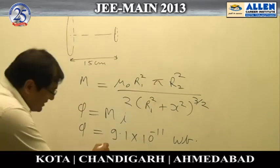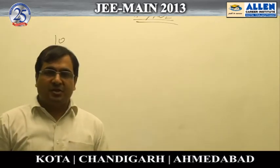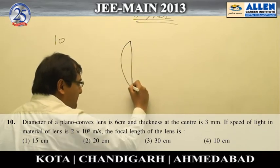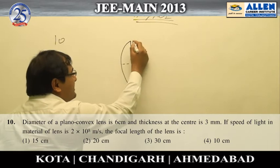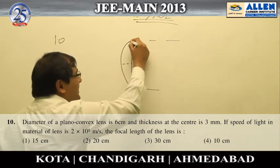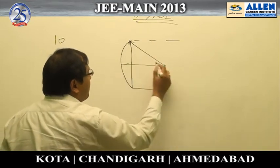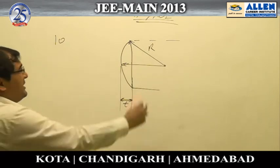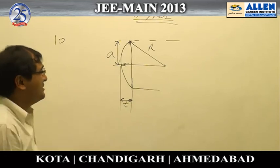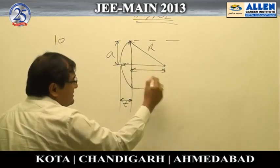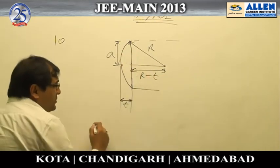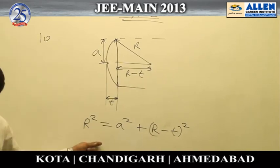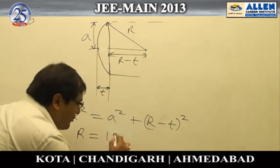Question number ten deals with a plano-convex lens. The diameter and radius of the lens are given. Let the thickness of the lens be t, the radius of curvature be r, and the diameter be a. Applying the Pythagorean theorem — since the distance is r − t — we get r² = a² + (r − t)². Solving this equation gives the radius of curvature as 15 centimetres.